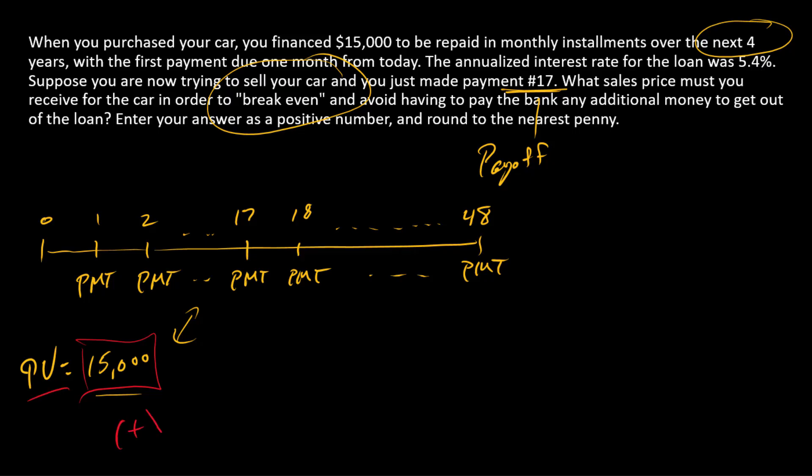It's going to be positive. 48 is N. I is the monthly rate, so that's 5.4% divided by 12. FV is 0 since there's no additional payment at time 48, and we're solving for the payment.